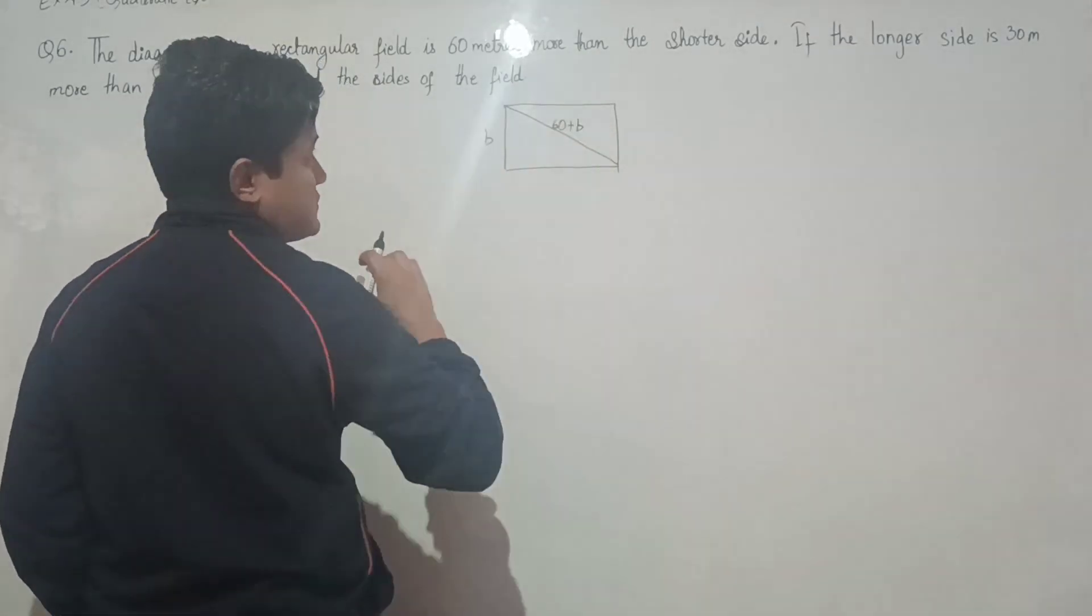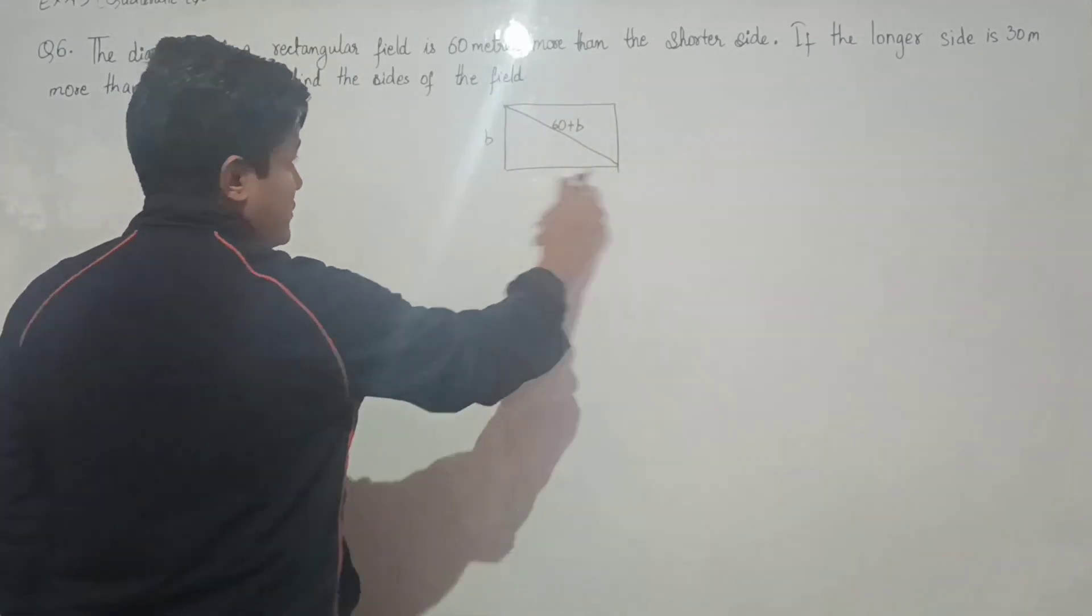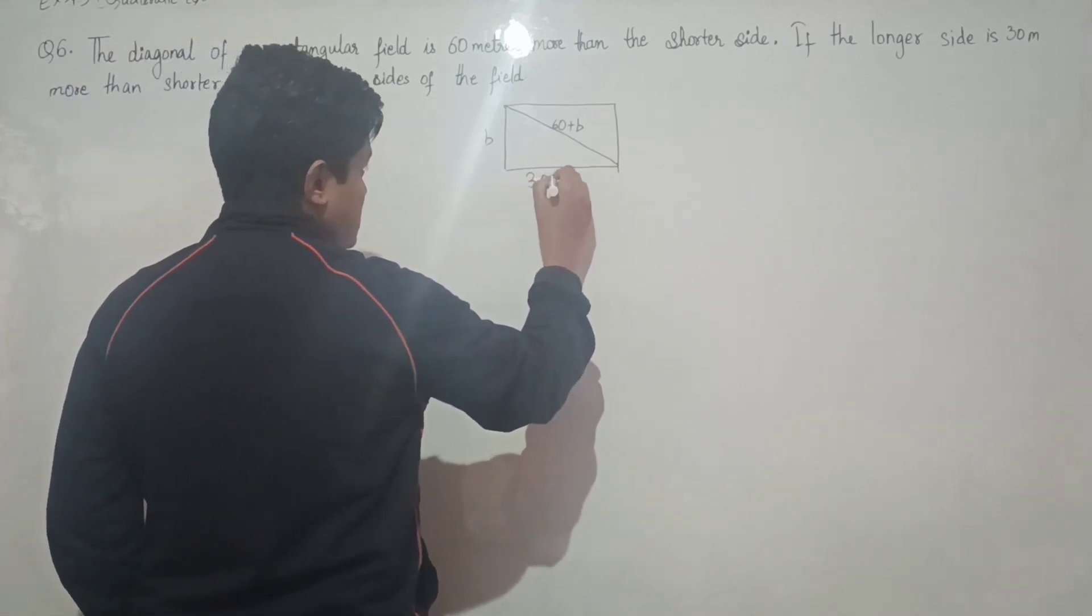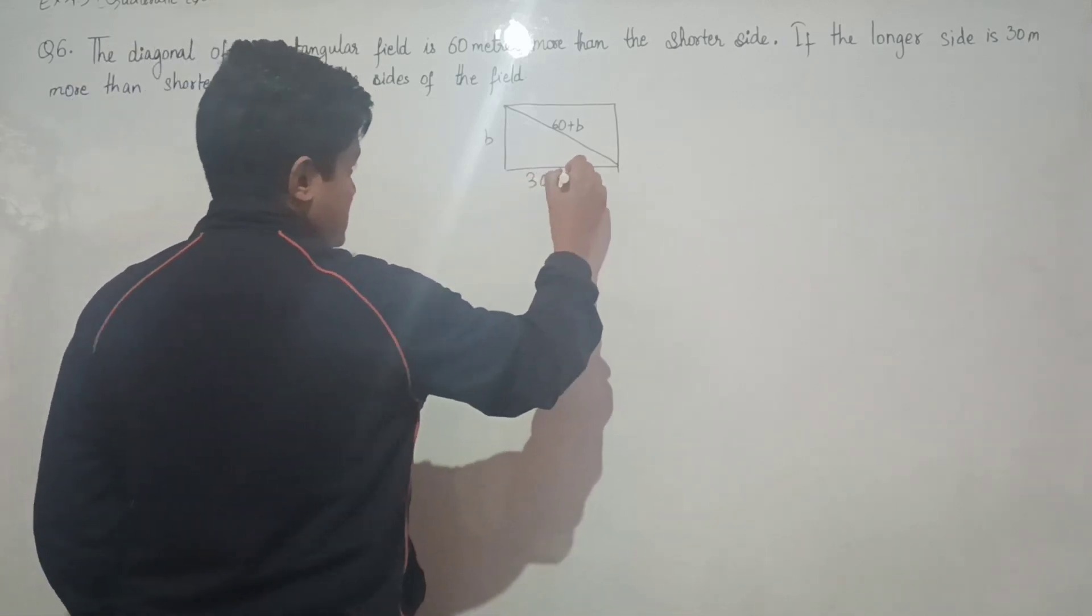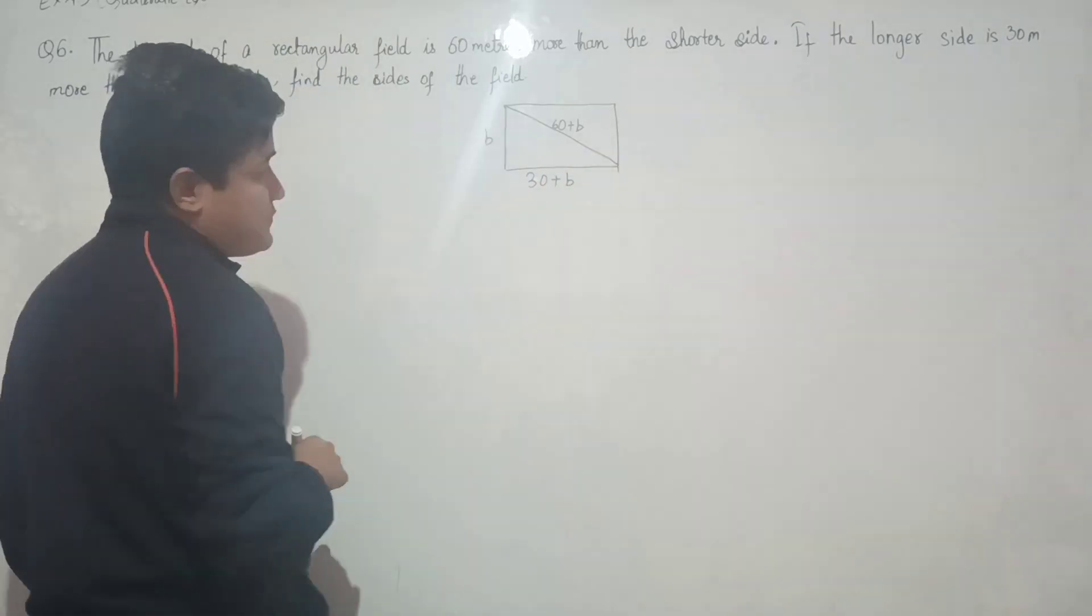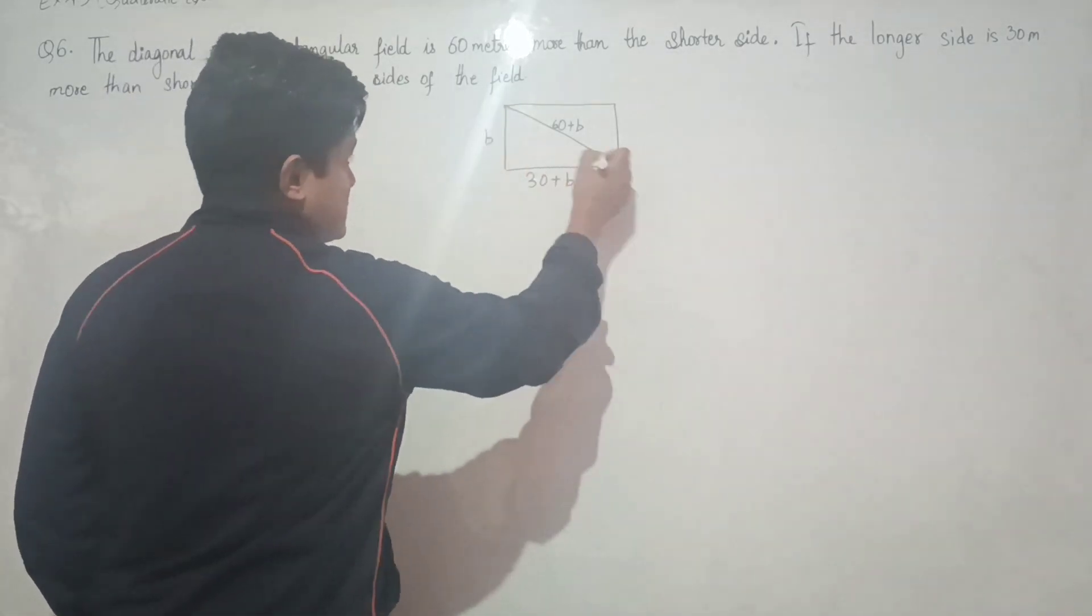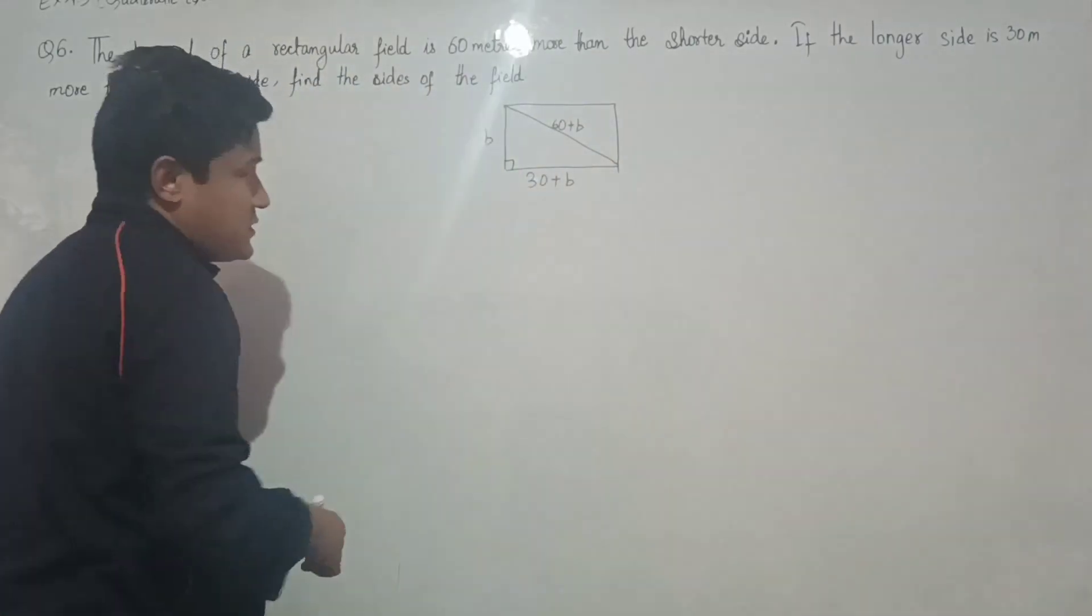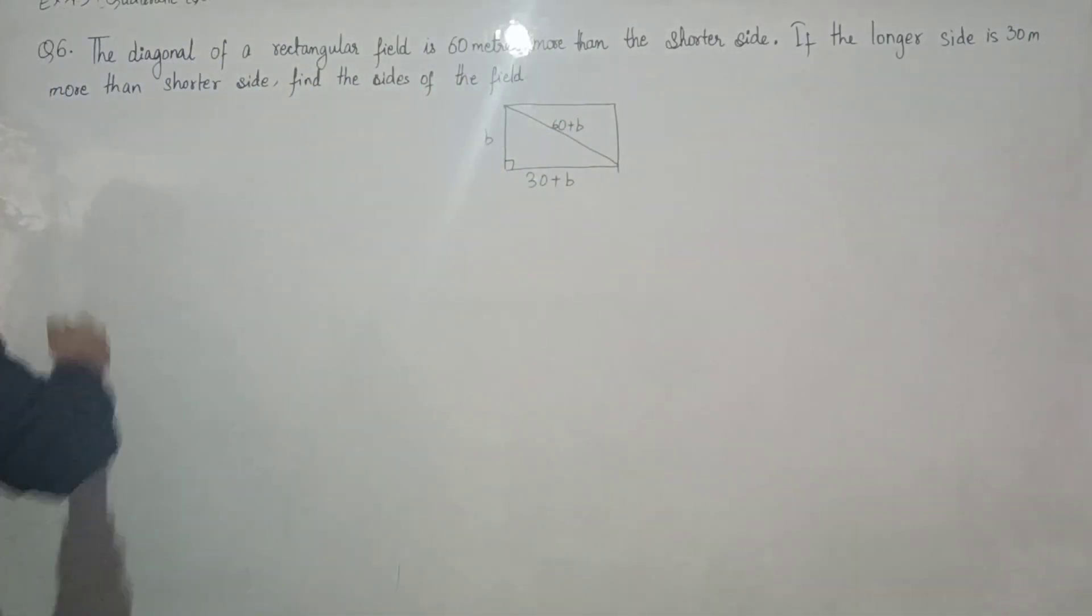Let us denote the shorter side by b. So the diagonal is 60 plus b. The longer side is 30 meters more than the shorter side. If we see this portion, it is a right angle triangle, so we can apply Pythagorean theorem.